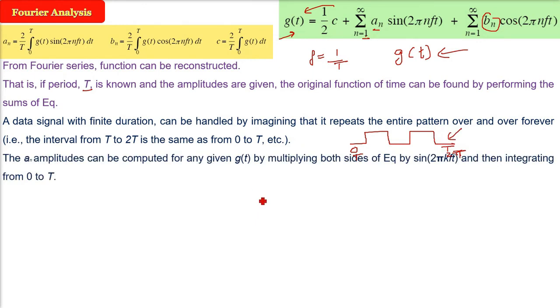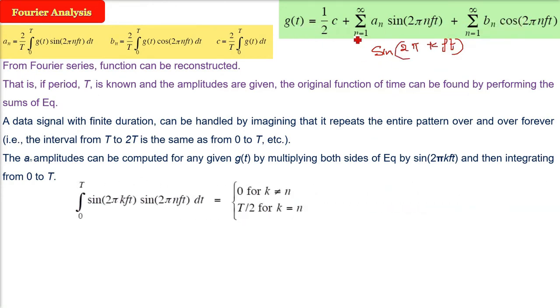Now the question comes, how to find out this constant terms, a_n, b_n and the c term, constant term. It is quite easy. It is all trigonometric expressions we will use. Just have to multiply the whole expression, which you see here, by sin(2πkft). Multiply both sides by sin(2πkft) and just integrate with the period, that is from 0 to T. So when we integrate it, the whole expression multiplied by sin(2πkft). What do we get? We get a_n, because all the term of b_n will vanish. This is simple trigonometric.